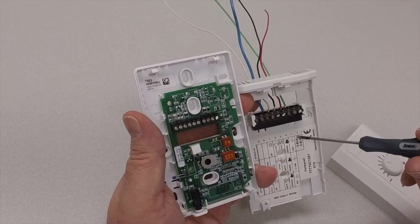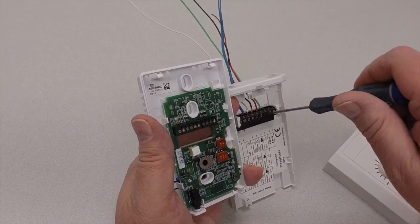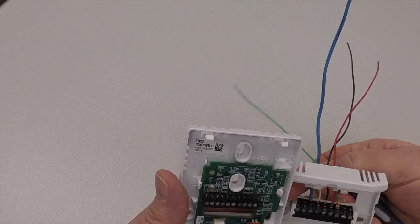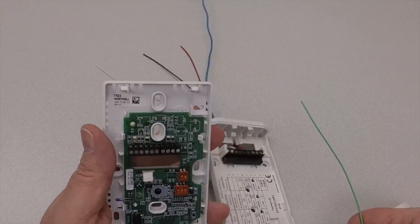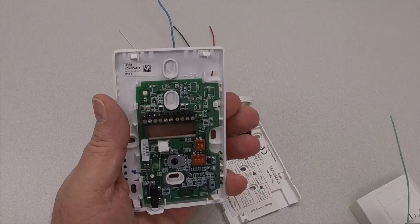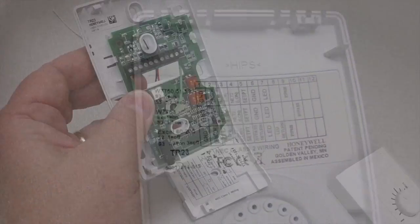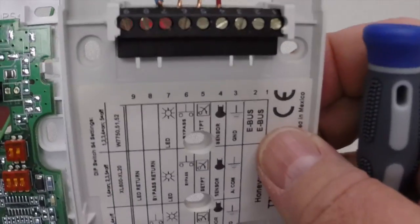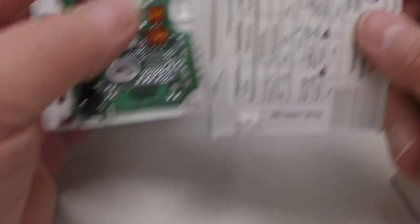We'll start with the ground. Ground is number three on this one. On this particular sensor, ground is number one. Number four on this one is the sensor, and the sensor on the new stat is number two.